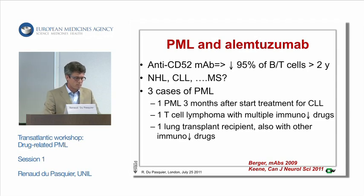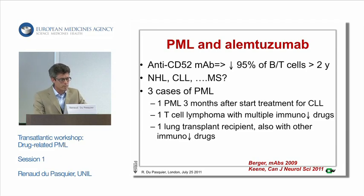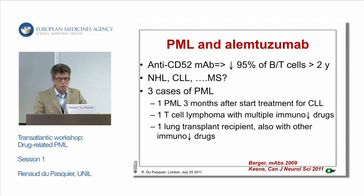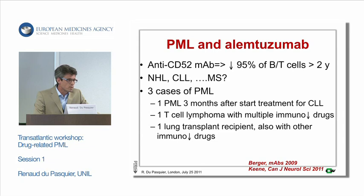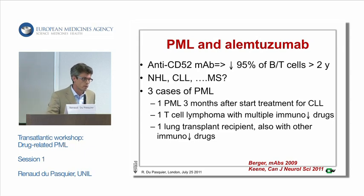PML and alemtuzumab: it is an anti-CD52 monoclonal antibody that decreases B and T-cells to a very large extent for at least two years. As Dr. Berger wrote, one would expect many PML cases if this were purely due to immunosuppression. This drug has been associated with non-Hodgkin lymphoma, chronic lymphocytic leukemia, and may come on the market for multiple sclerosis. Surprisingly, only three cases of PML have been reported with alemtuzumab, and in each case there was a good explanation independent of the drug — one had CLL, one a lymphoma, and one a lung transplant.